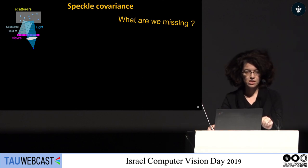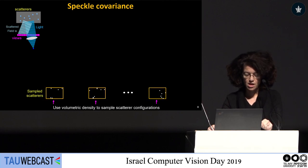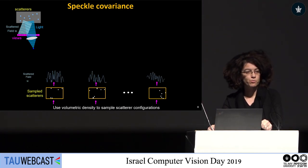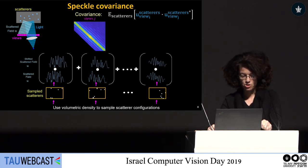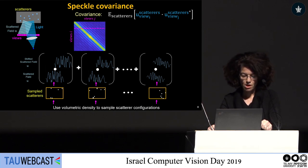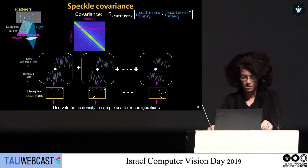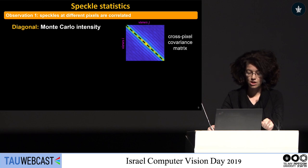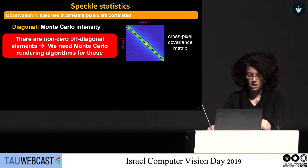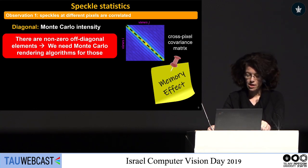To see what we are missing, let's revisit this experiment in a slightly different form. We sample different particle configurations and solve the wave equation to get the scattered field, but now instead of computing the intensity, we compute the outer product. Averaging this over all particle instantiations gives the field covariance. One row in this matrix is the average of the speckle at sensor i times all other speckles at all other viewing directions. The standard Monte Carlo intensity algorithm is exactly the diagonal of this matrix, but we observe there are also non-zero off-diagonal elements which are absent from the standard Monte Carlo algorithm — and there are even more second-order statistics we are missing, such as the memory effect.